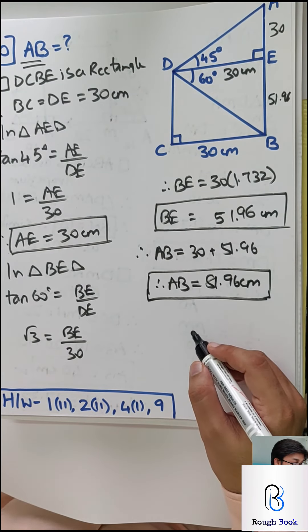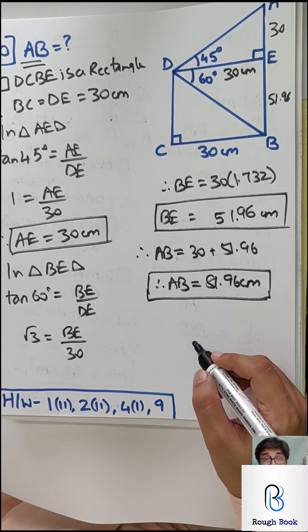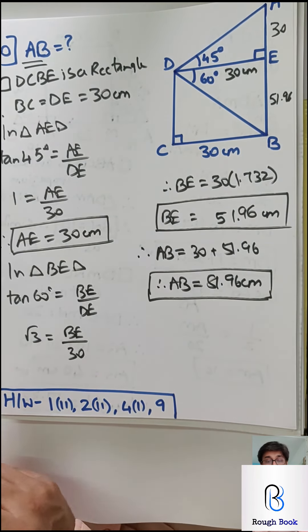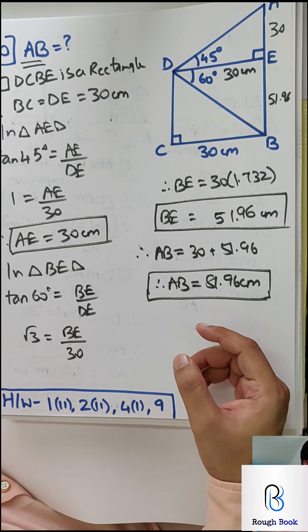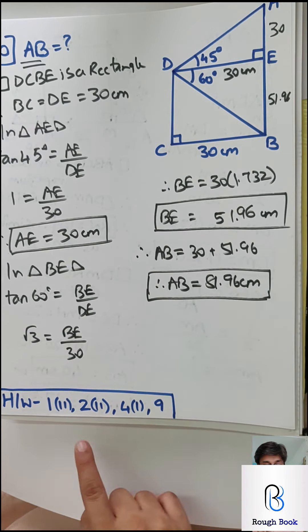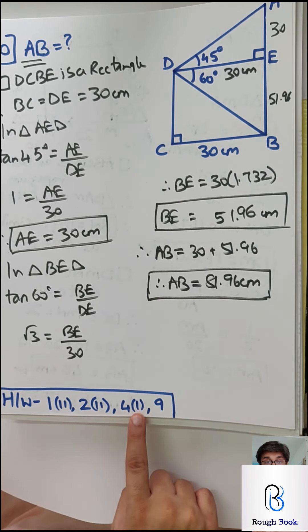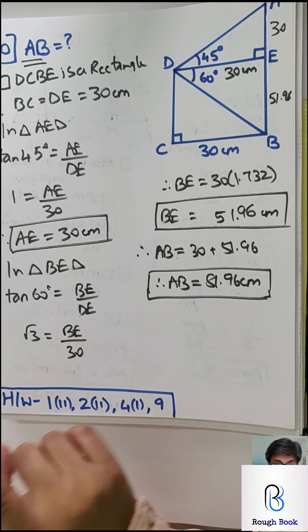If you are able to get this one, then in standard 10 you will get heights and distances easily. For homework: do sum 1 Part 2, sum 2 Part 2, sum 4 Part 1, and sum number 9. Please do these sums honestly — don't cheat. Hope you had a lovely mathematics experience with Rough Book, our learning companion.